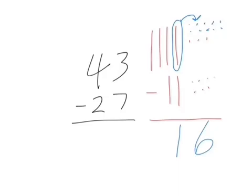So 43 minus 27 gives us a difference of 16.